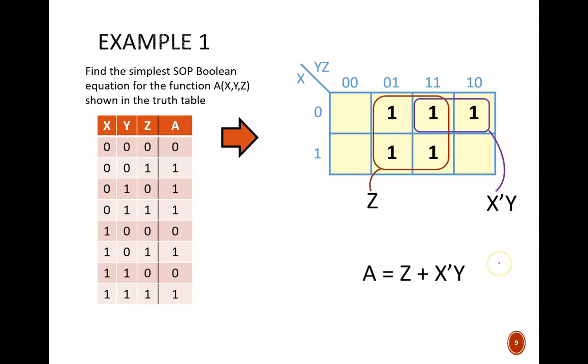Lastly, we simply bring those product terms together into this SOP equation by placing the OR operator between them and setting it equal to the output variable. So, a equals z OR x prime y. Since we use the largest possible groups, we know we have the simplest possible equation.